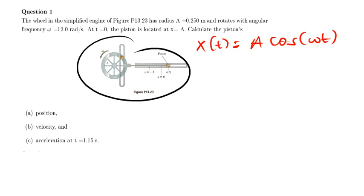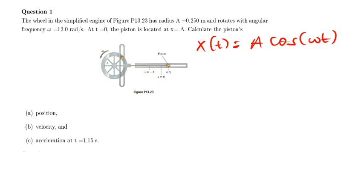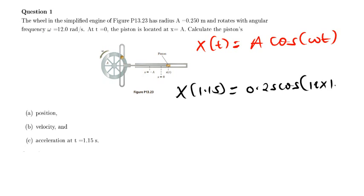Some of you looked at the diagram and thought we hadn't done this topic. But if you read the question, we have all the data. You'll be like 'we have a piston, I think we haven't done this' and start asking which topic it falls under. This is the most simple question I've come across, but people get confused because of the diagram. Let's go ahead and find the answer. The amplitude we have been told is 0.25, so 0.25 cos(12 × 1.15), with the calculator in radians.